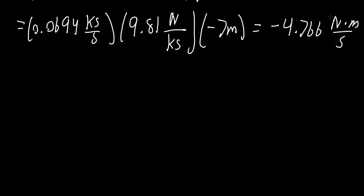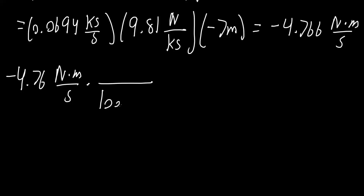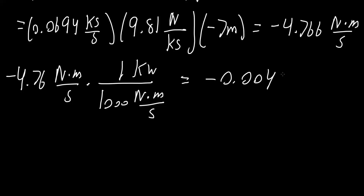Now we will convert this into kilowatts, like what we did for the change in kinetic energy. We have negative 4.766 newtons times meter divided by second, and we know that 1,000 newtons times meter divided by second is 1 kilowatt. So we get negative 0.00476 kilowatts. This is the change in potential energy.